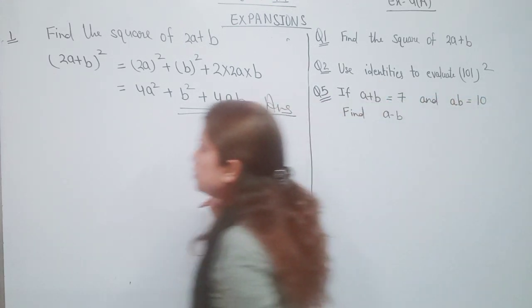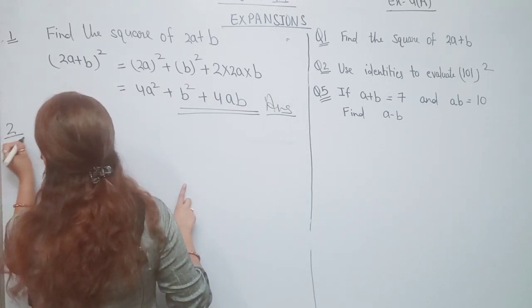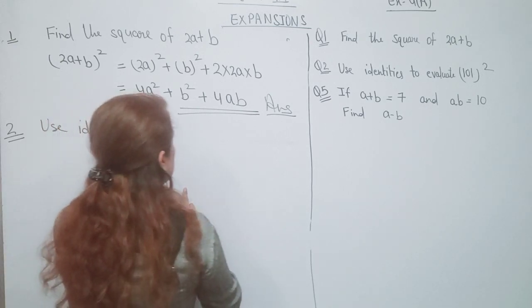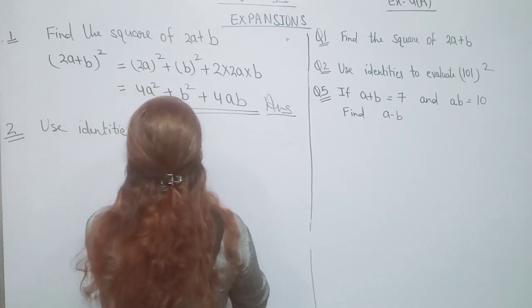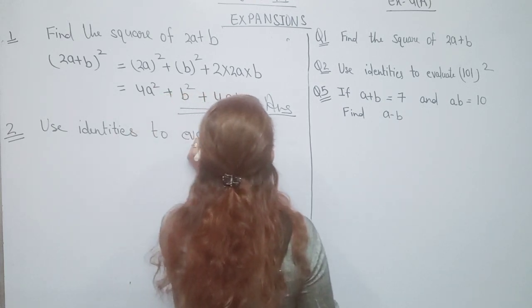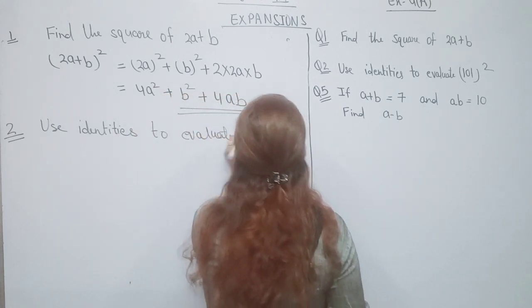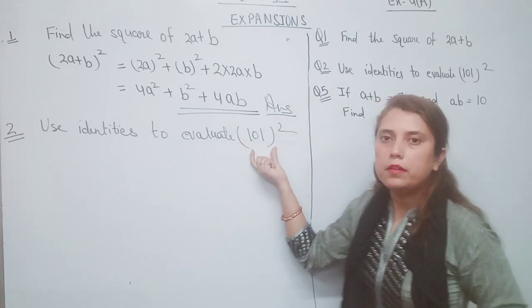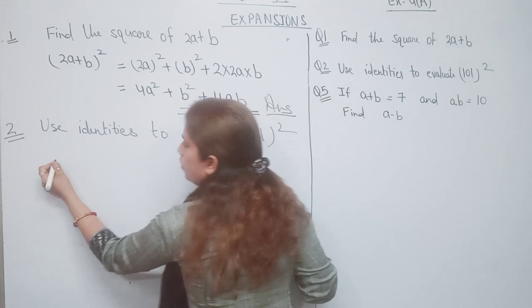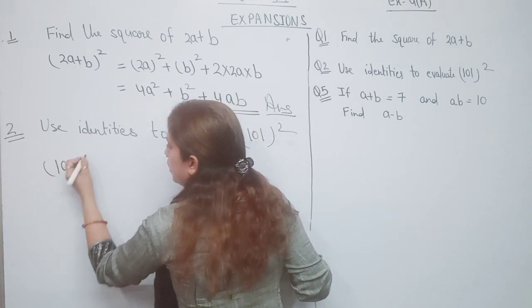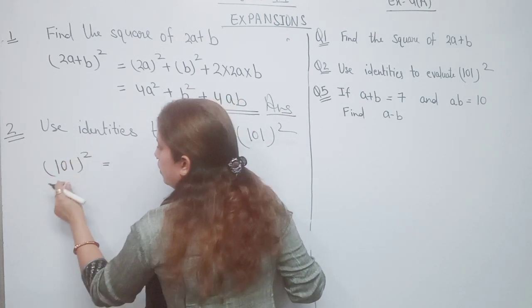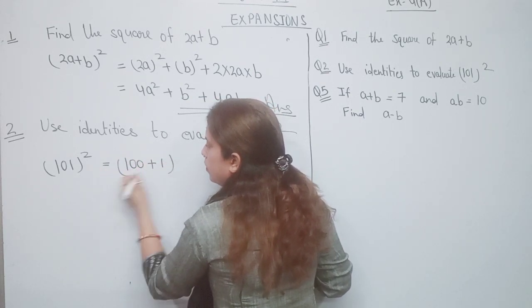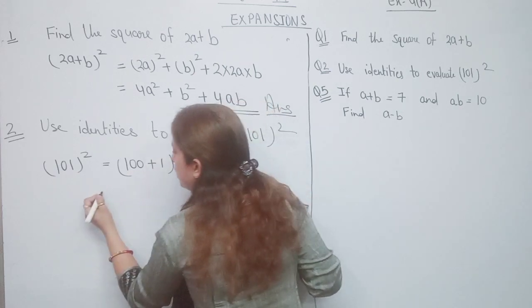Question number 2: use identities to evaluate 101². We can write 101 as 100+1, so we write it as (100+1)² and apply the identity.